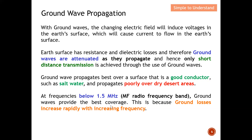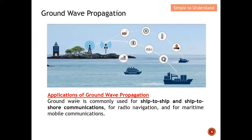Ground wave loss increases rapidly with increasing frequency — the higher the frequency, the higher the loss. Therefore ground wave propagation is not used at high frequencies. Since the sea has salt water, which is a good conductor, ship-to-ship and ship-to-shore communication via ground wave propagation is very common.